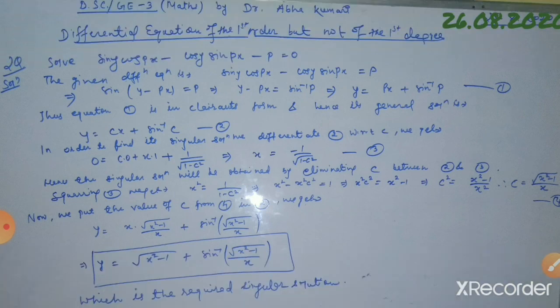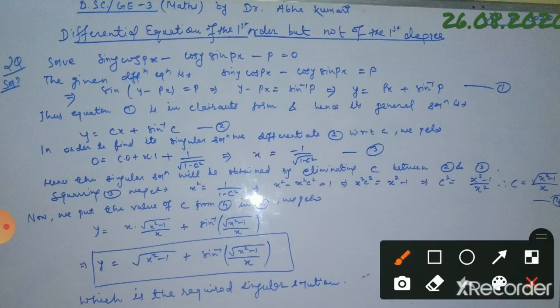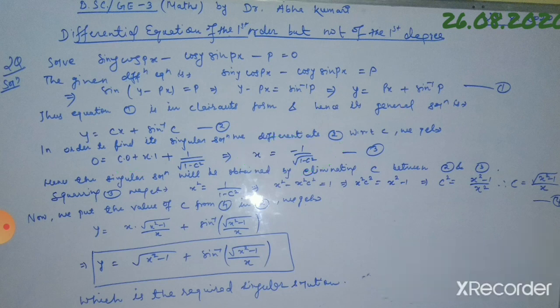Differentiating equation number 2 with respect to c, we get 0 equals x plus 1 divided by root over (1 minus c²). This implies x equals minus 1 divided by root over (1 minus c²), which we call equation number 3.